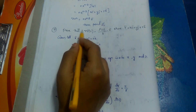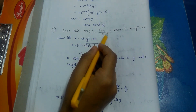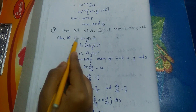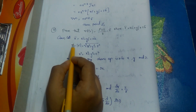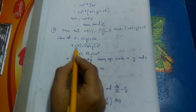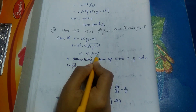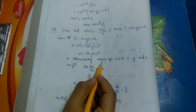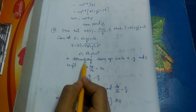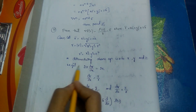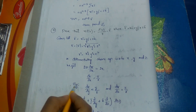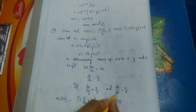Next, prove that ∇f(r) = (f'(r)/r)·r̄, where r̄ = x·ī + y·j̄ + z·k̄. Given r̄ = x·ī + y·j̄ + z·k̄, mod r̄ = r = √(x² + y² + z²), so r² = x² + y² + z². Differentiating similarly as the first question: ∂r/∂x = x/r, ∂r/∂y = y/r, and ∂r/∂z = z/r.